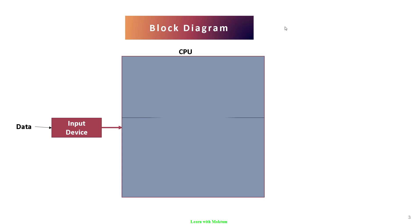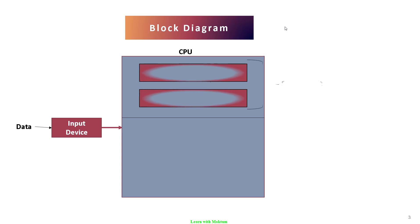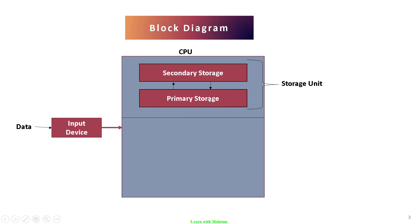The CPU contains some units, like a storage unit. Whenever data enters the CPU, it is temporarily stored in primary storage — that is your RAM, random access memory. If you want to store data or instructions for a longer period, you can store them in secondary storage. Examples of secondary storage are hard disk or optical disk.